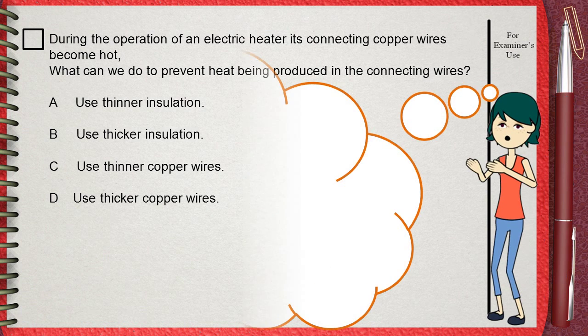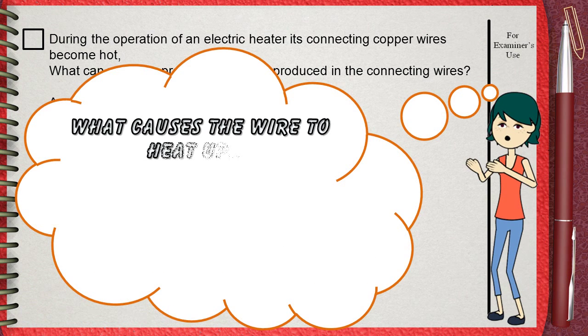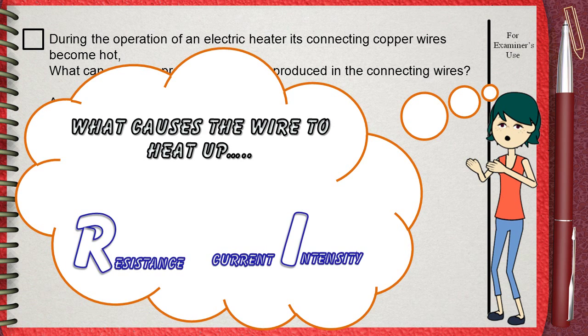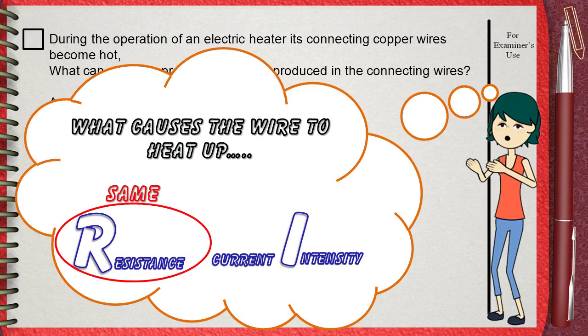you must first know what causes wires to heat up. The two causes of heating in wires are the resistance of the wire and the current intensity passing through the wire. This means that if two wires have the same resistance,